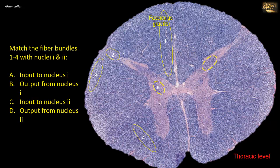Two is a tract between the peripheral margin of the cord and the tip of the dorsal horn — the dorsolateral tract of Lissauer. Three is at the periphery of the lateral funiculus — being posteriorly located, it is the dorsal or posterior spinocerebellar tract. Four extends from the lateral to the anterior funiculus, formed by grouping the lateral and ventral spinothalamic tracts together — the anterior lateral system. Now let's deal with the first nucleus: the nucleus proprius.